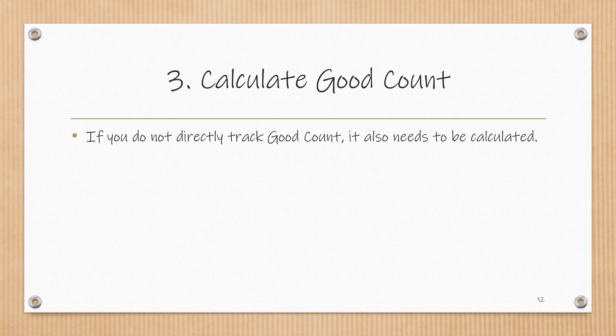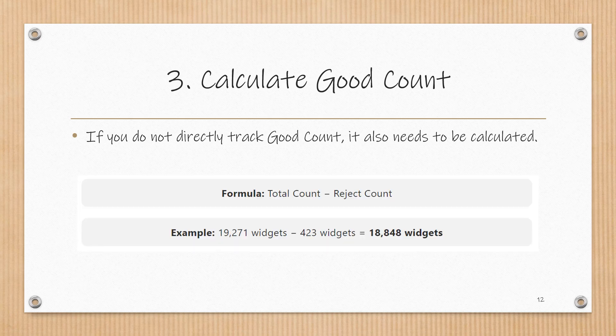If you do not directly track good count, it needs to be calculated using the formula total count minus reject count. In our example, 423 rejects are subtracted from the total production of 19,271, resulting in a good count of 18,848.